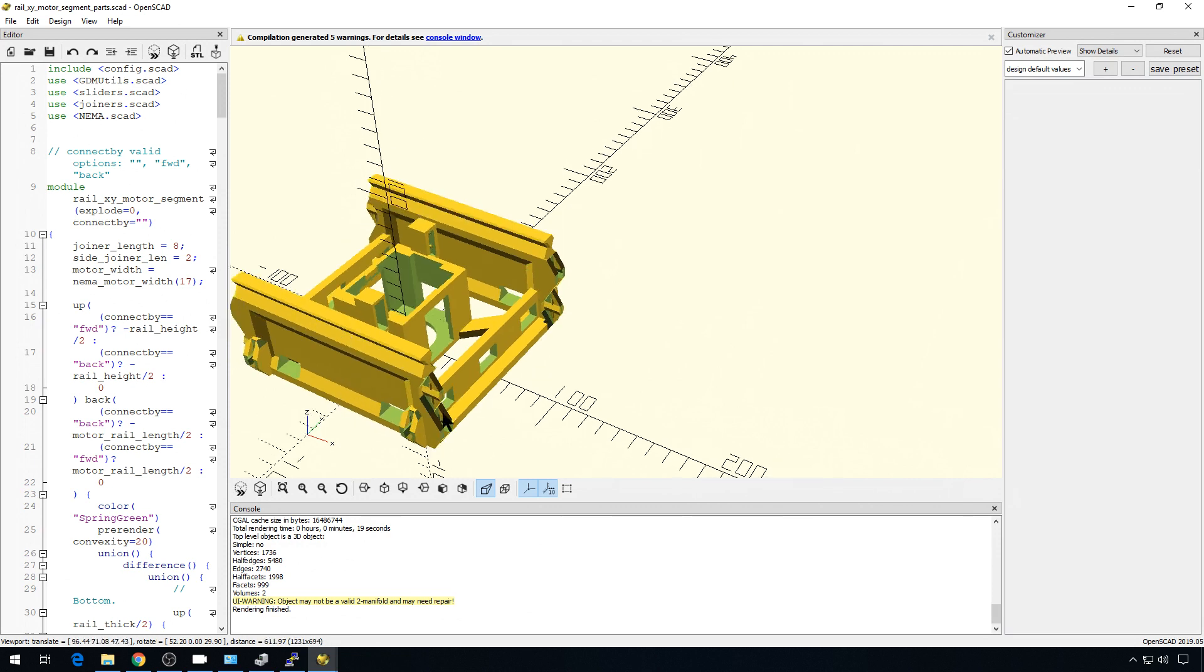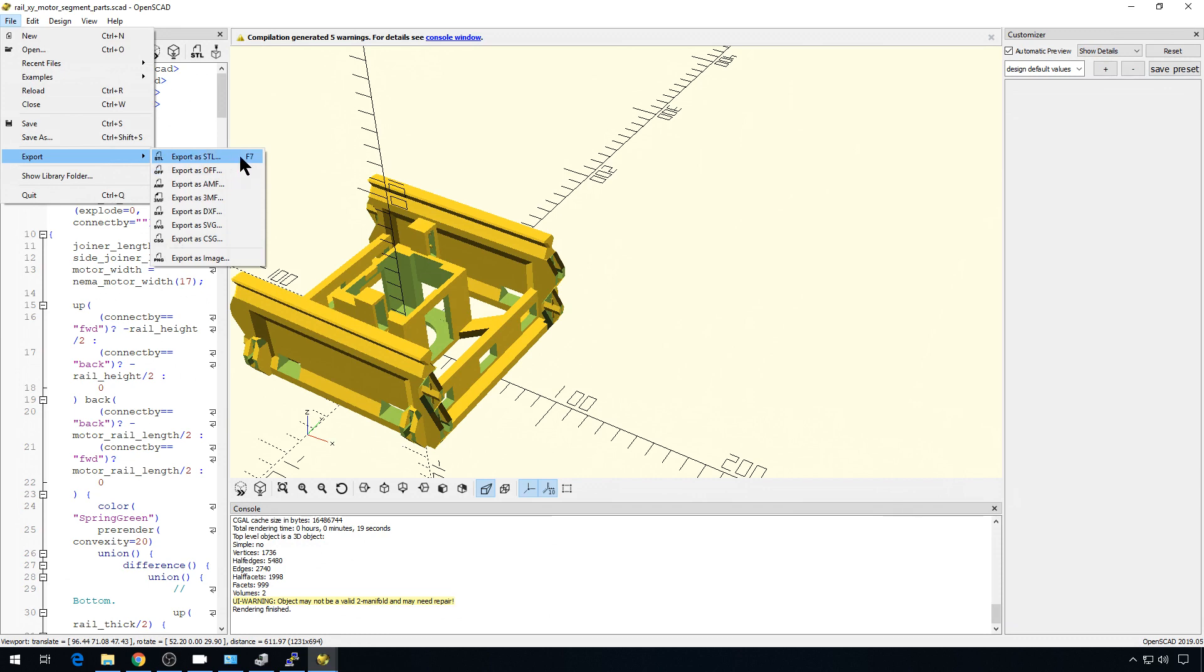It adjusts things like the rail size and the snap fit parts. And from here, then you can go to File, and export your STL with your new slop value.